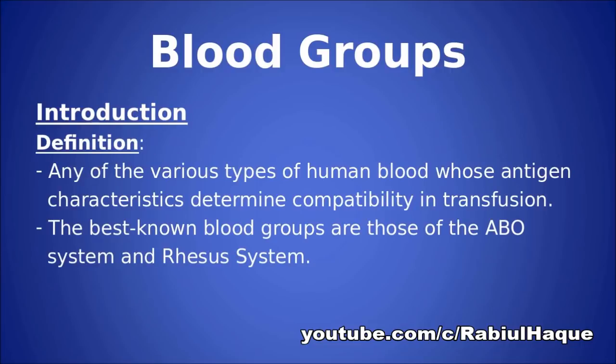So how can we define blood groups? Any of the various types of human blood whose antigen characteristics determine compatibility in transfusion is defined as a blood group. The best known blood groups are those of the ABO system and the rhesus system.